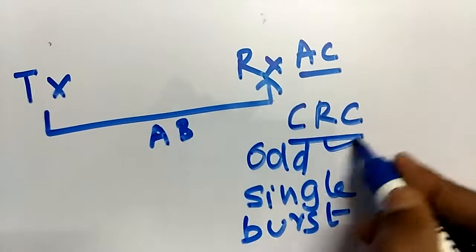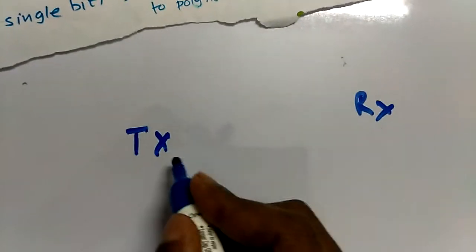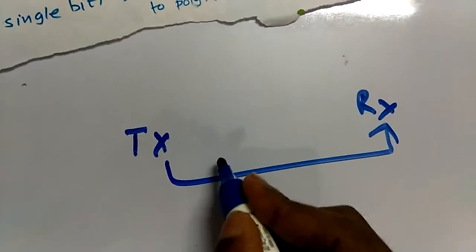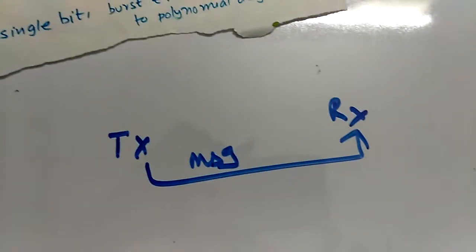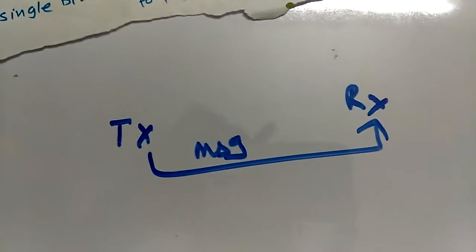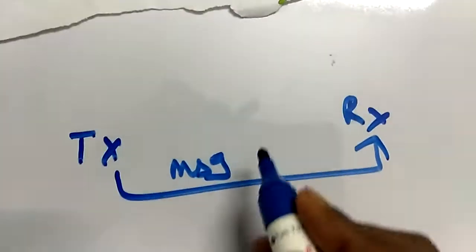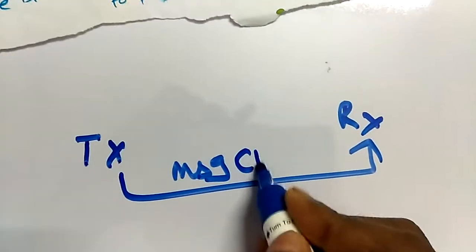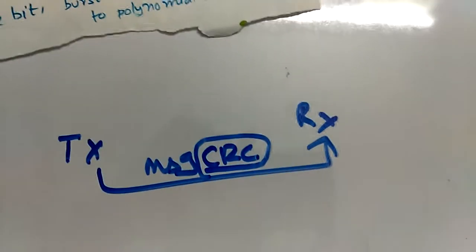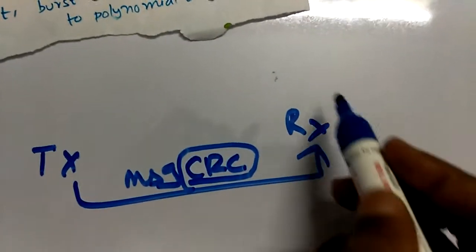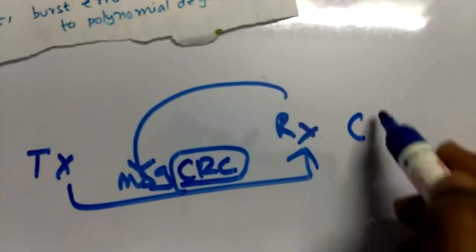Suppose TX sends a message data to RX. Simply sending the message alone will not provide a detection method, so we add a bit called the CRC bit. This CRC bit will be checked at the RX. The RX will do calculations on the message and generate its own CRC value.